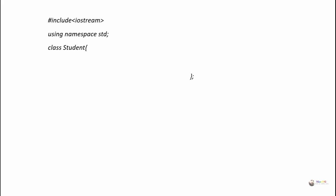The class starts and ends with curly braces; at the end we have to mention the semicolon. In the private section we have declared two data members: role number of int type and name as a character array. Since we have not mentioned an access specifier, by default the access specifier is private, so role number and name are private data members. We then change the access specifier to public followed by a colon symbol for the member functions.